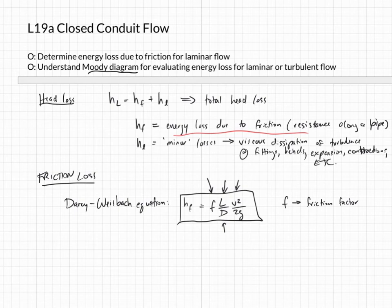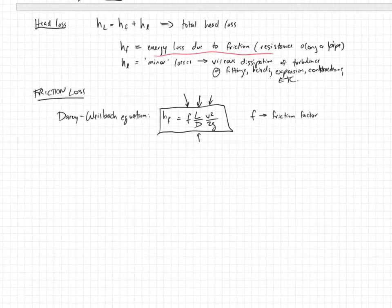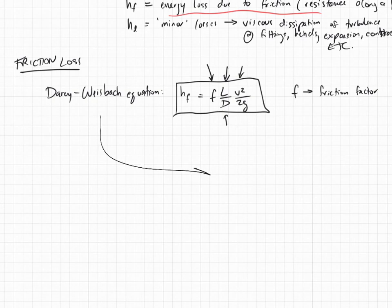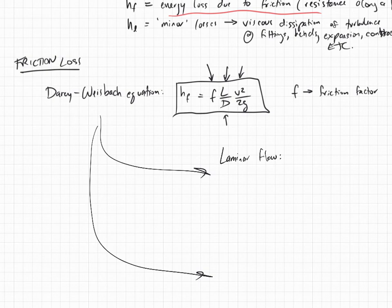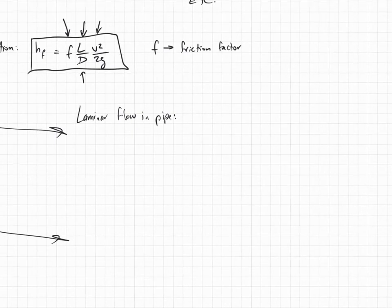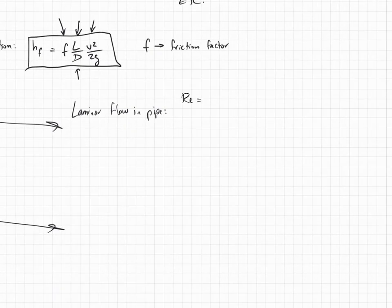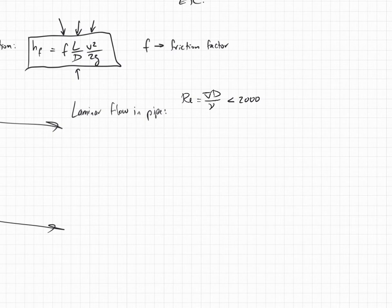Let's talk about laminar flow in a pipe. This is the case where the Reynolds number — VD over nu — is less than about 2,000. That's a very approximate number. What that means is the Reynolds number is small, so the viscosity is important. It's small because the viscosity is relatively large, so we can say the viscosity matters and is important in this case.